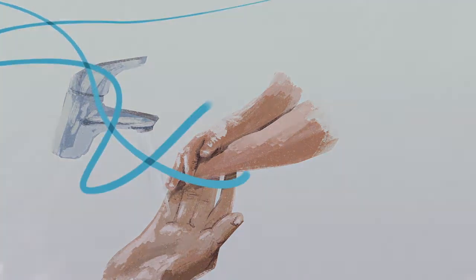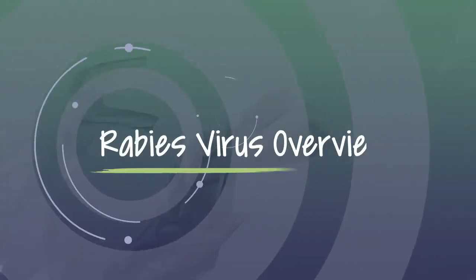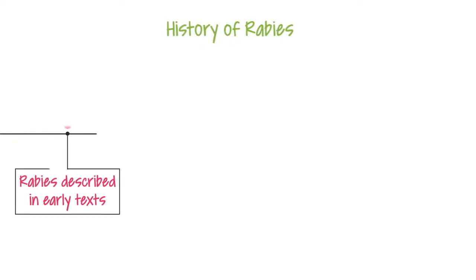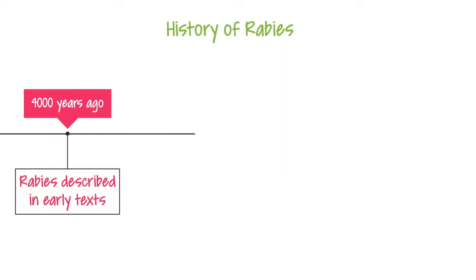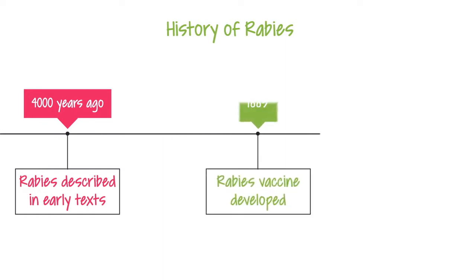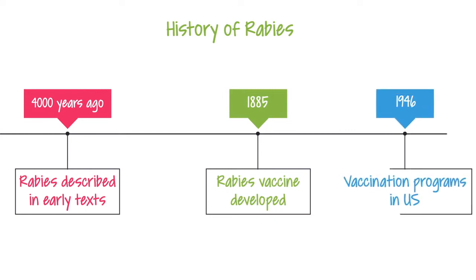Although this particular case ended tragically, rabies can be prevented. Rabies has been known for more than 4,000 years. Prevention initially consisted of avoiding bites by suspected rabid dogs until a vaccine was invented in 1885. After World War II, animal vaccination programs have helped limit the effect of rabies in the U.S. However, despite being 100% preventable, rabies remains a worldwide problem.